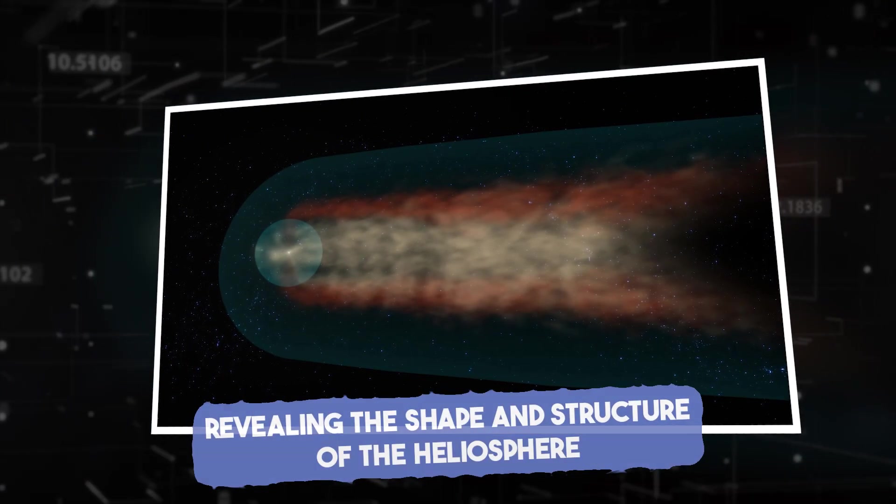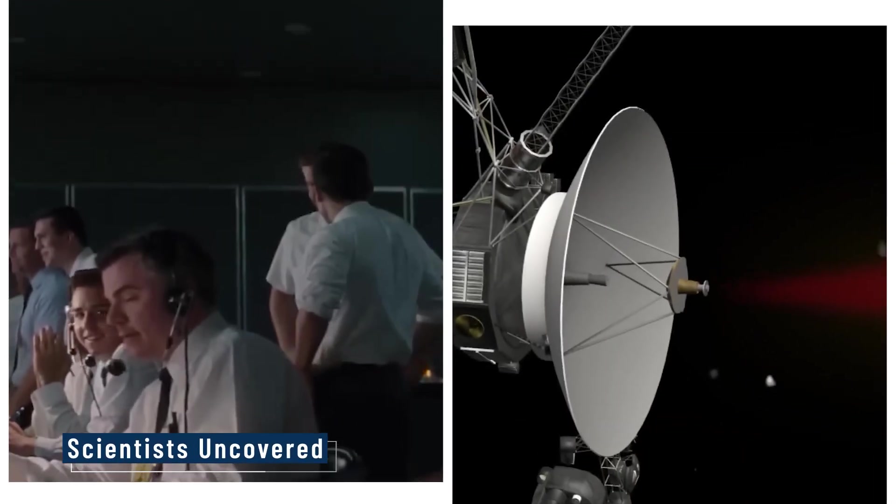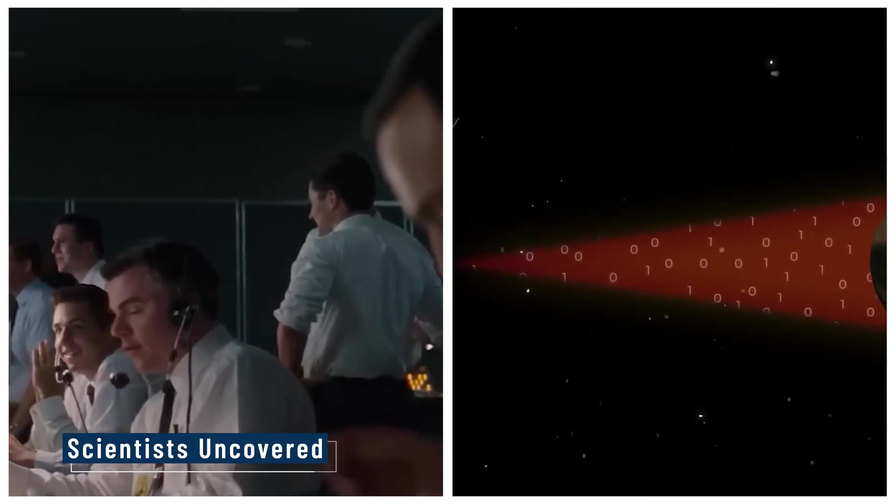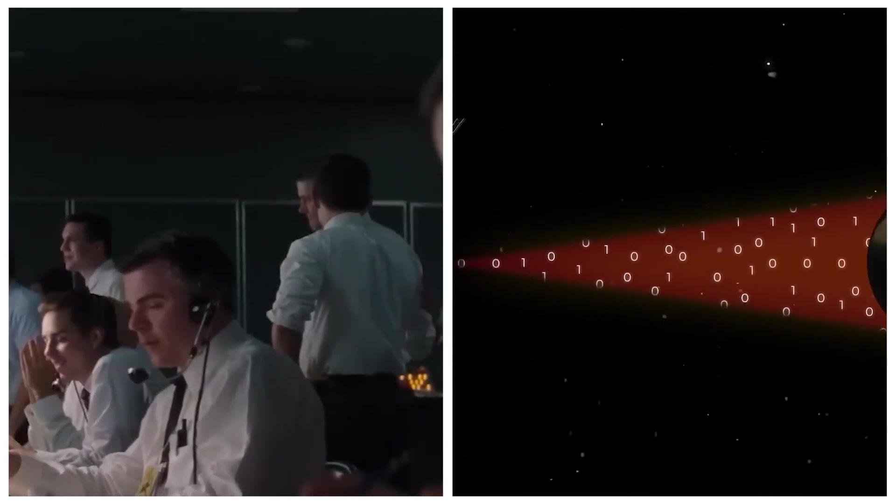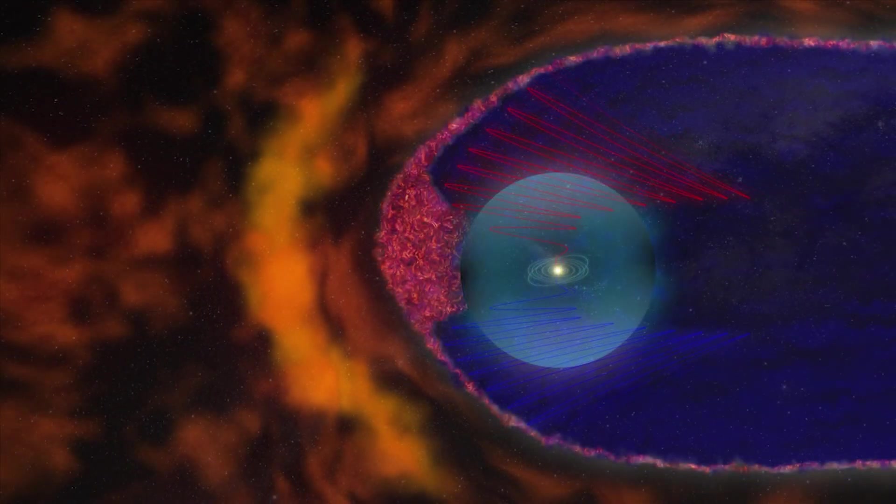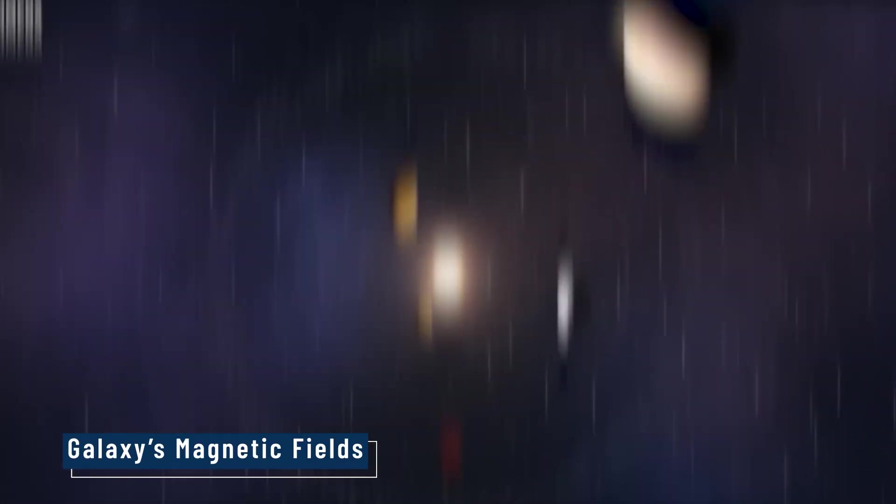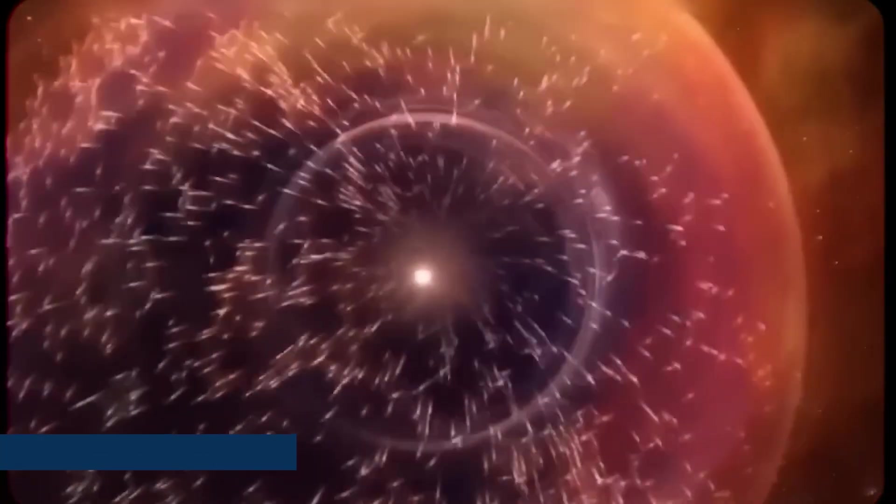Revealing the shape and structure of the heliosphere. Combining Voyager 2's data with Voyager 1's, scientists uncovered that the heliosphere isn't a perfect bubble, but a warped, distorted shape. Instead of a smooth sphere, it resembles a teardrop or comet-like structure, twisted by the galaxy's magnetic fields and the pressure of interstellar gas.